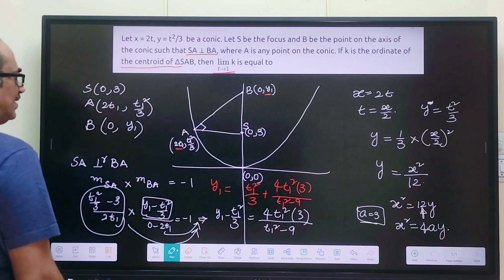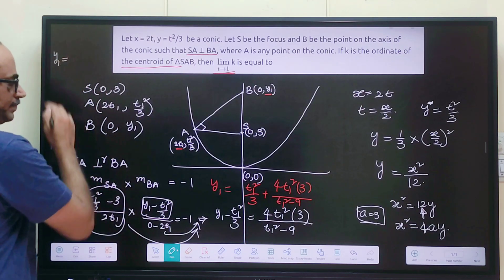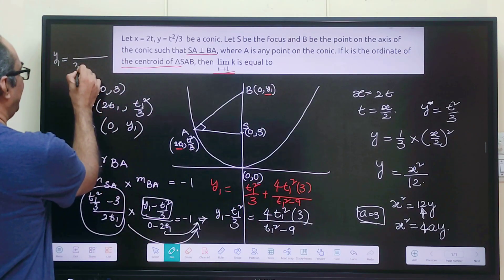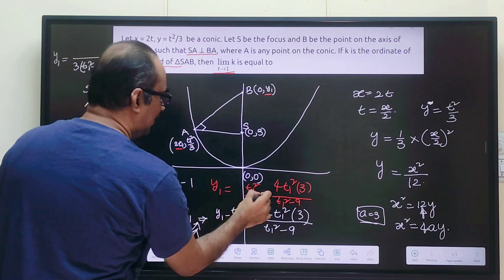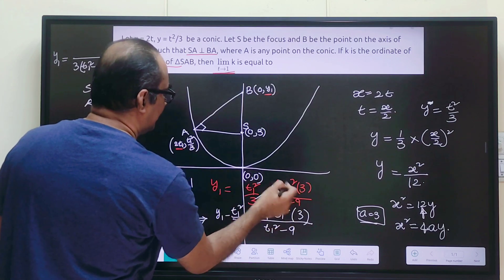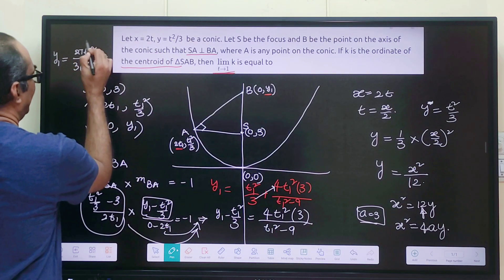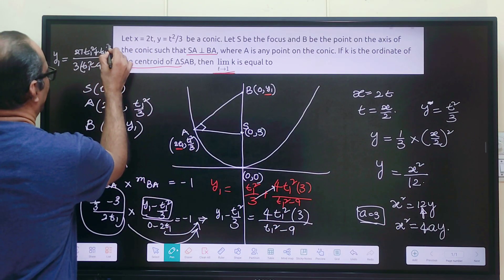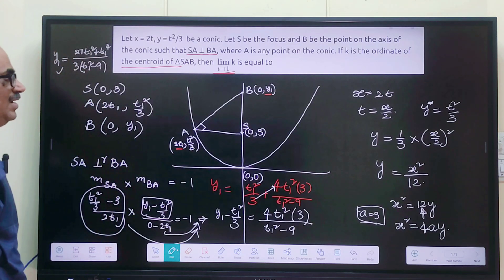Let us simplify that. What is y₁? We have in the denominator 3(t₁² - 9), and in the numerator when we multiply we get 27t₁² + t₁⁴. So we have y₁ now. We have all the coordinates SAB everything ready.